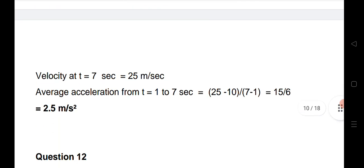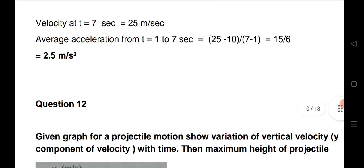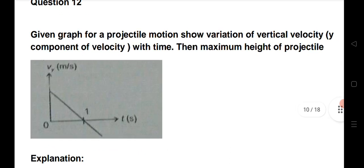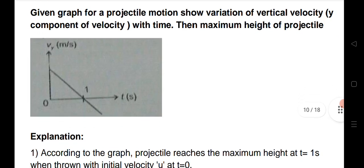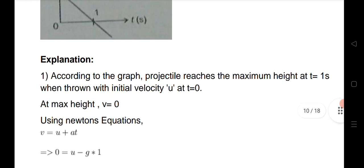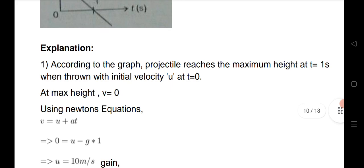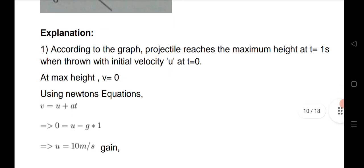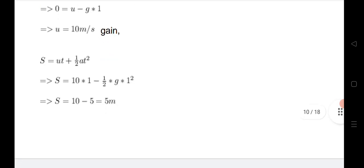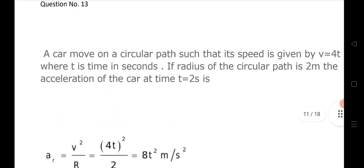Question 12: a given graph for a projectile shows the variation of velocity with time. Find the maximum height of the projectile. First calculate the initial velocity from the graph, then substitute into the height formula s = ut + ½at² to get the maximum height.